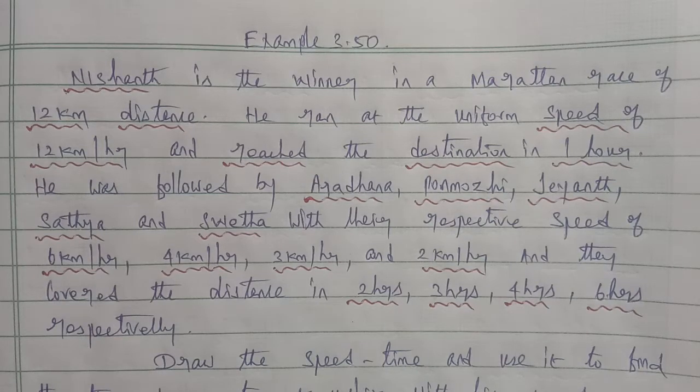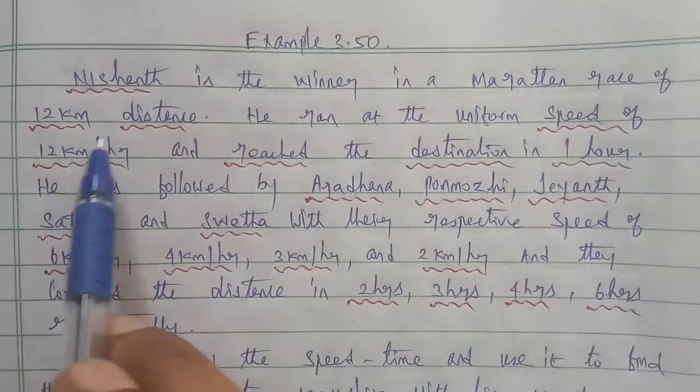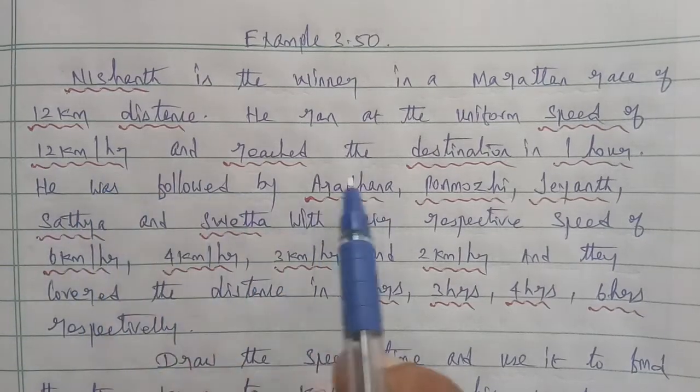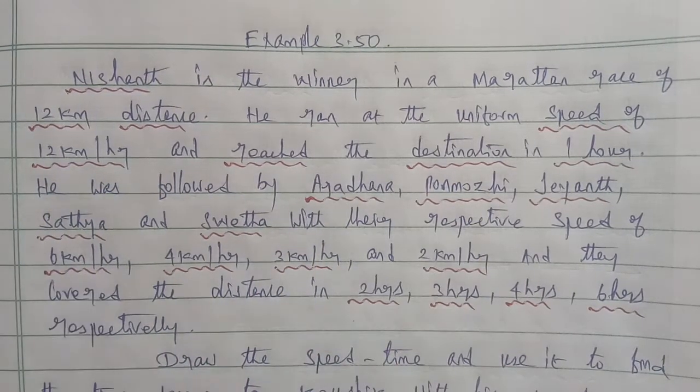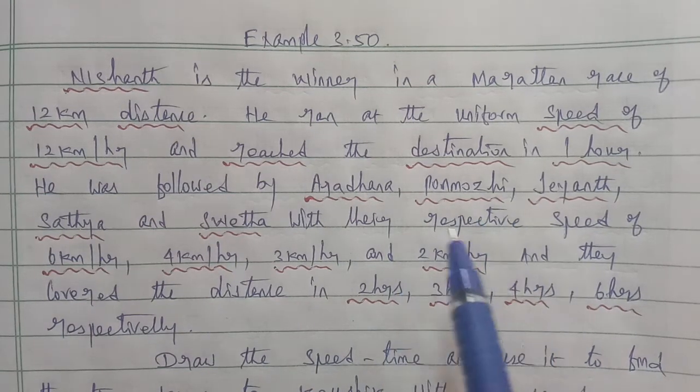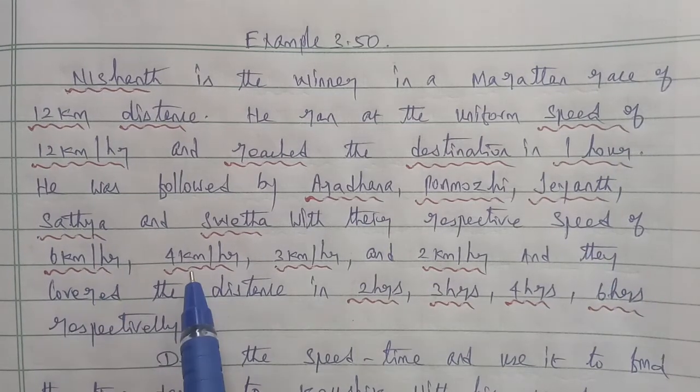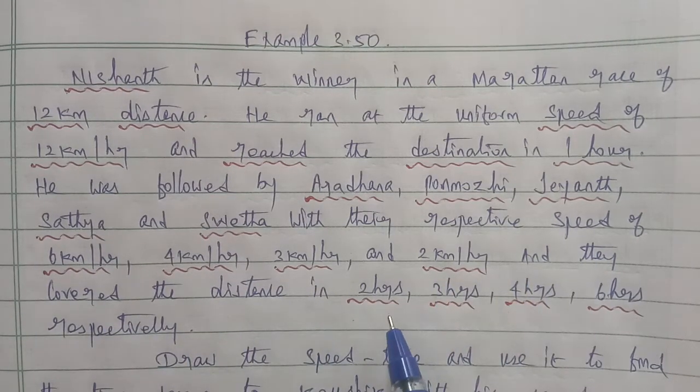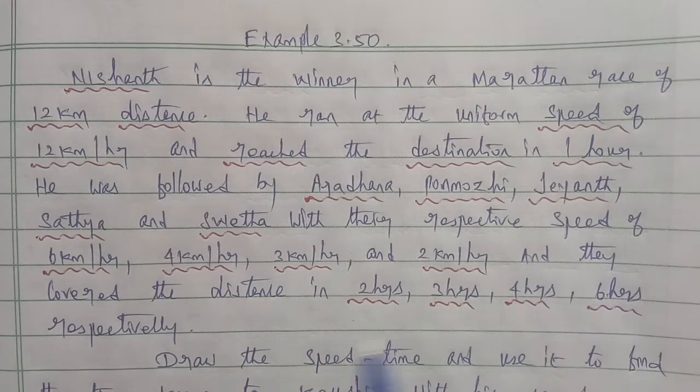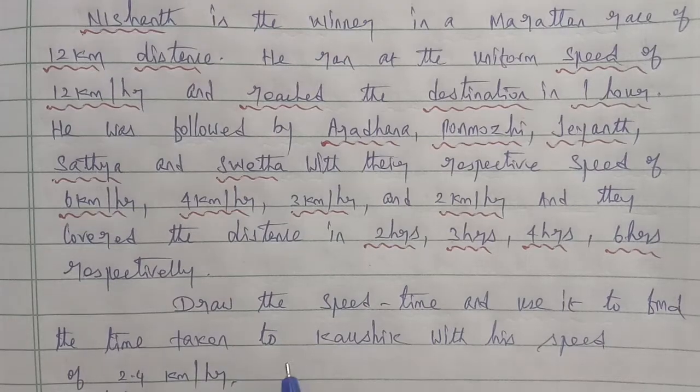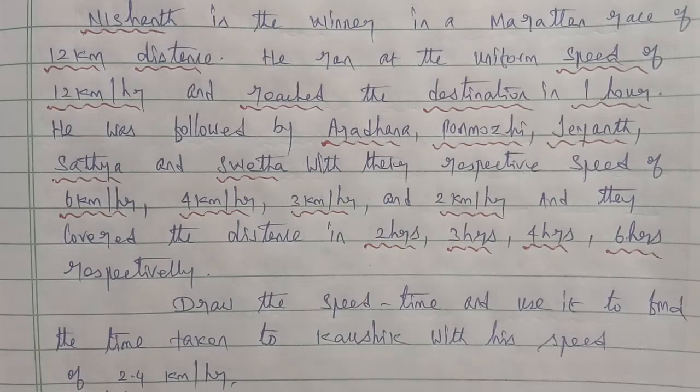Hi students, I am Opinath. 10th max exam 3.50. Given question: Nishanth is the winner in a marathon race of 12 kilometer distance. He ran at the uniform speed of 12 kilometer per hour and reached the destination in one hour. He was followed by Aradhana, Ponmali, Jayant, Sandhya and Sweta with their respective speeds of 6, 4, 3, and 2 kilometers per hour. They covered the distance in 2 hours, 3 hours, 4 hours, and 6 hours respectively. Draw the speed-time graph and use it to find the time taken by Kaushik with a speed of 2.4 kilometers per hour.